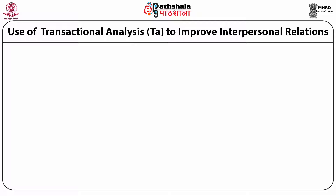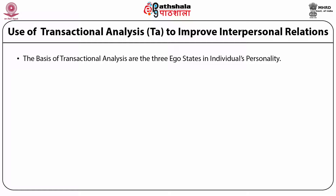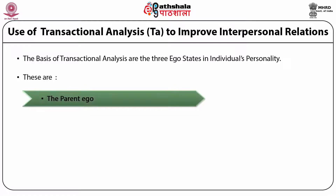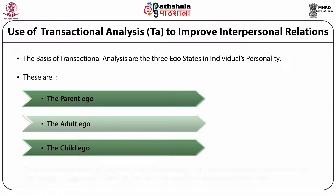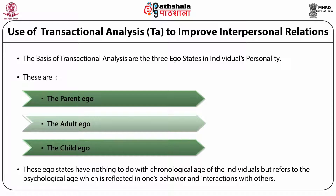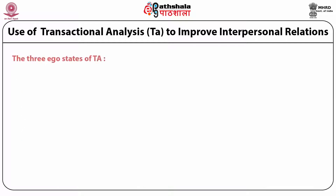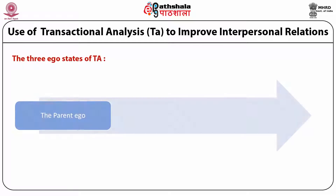Let us try to find out the importance of transactional analysis to improve interpersonal relations. The basis of transactional analysis are the three ego states in an individual's personality. These are the parent ego, the adult ego, and the child ego. These ego states have nothing to do with the chronological age of the individuals, but refer to the psychological age, which is reflected in one's behavior and interactions with others.